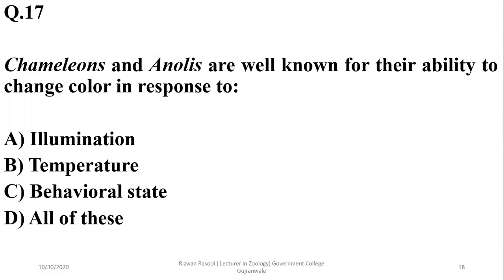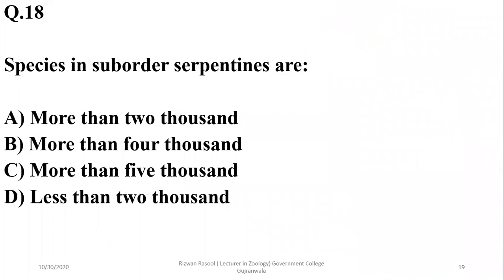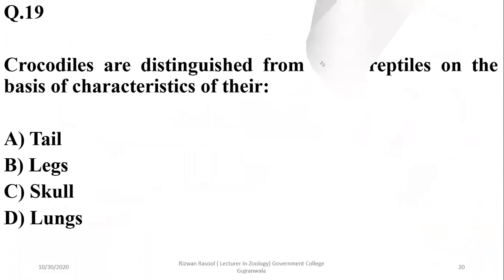Question sixteen: chameleons and anolis are well known for their ability to change color in response to illumination, temperature, or behavioral condition. The correct option is delta. Species in suborder Serpentes are more than 2,000 and include snakes.